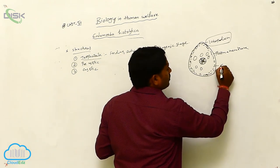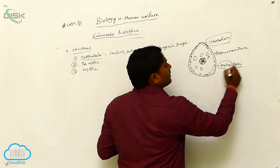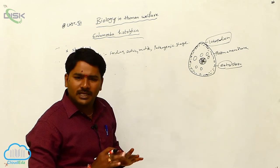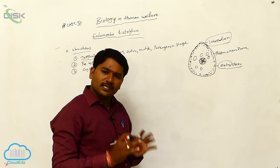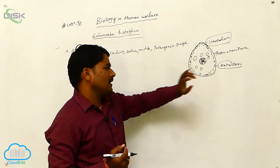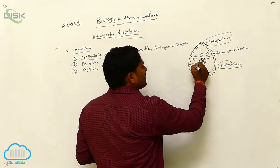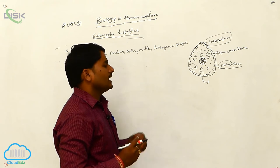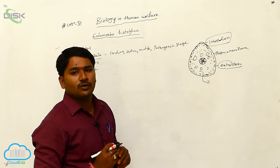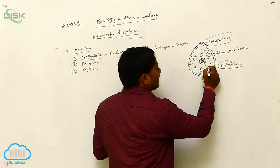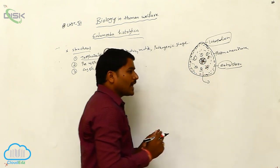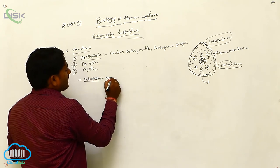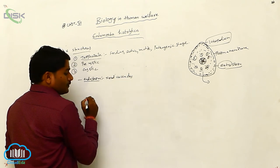The cytoplasm is differentiated into two regions. The outer ectoplasm is viscous, non-granular, transparent, and gel-like. The inner endoplasm is liquefied, granular, and opaque or non-transparent. Within the endoplasm, food vacuoles are present.